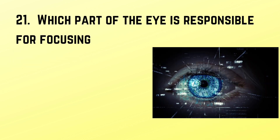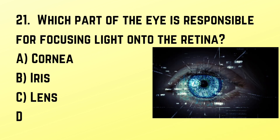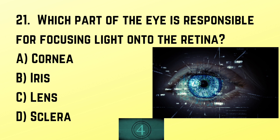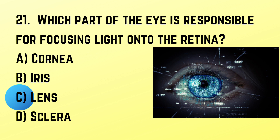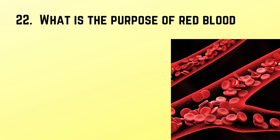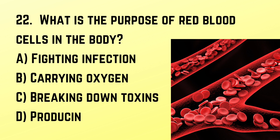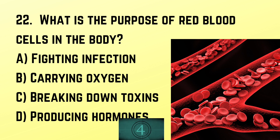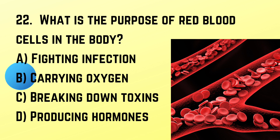Question number 21: Which part of the eye is responsible for focusing light onto the retina? Correct answer: C. Lens. Question number 22: What is the purpose of red blood cells in the body? Correct answer: B. Carrying oxygen.